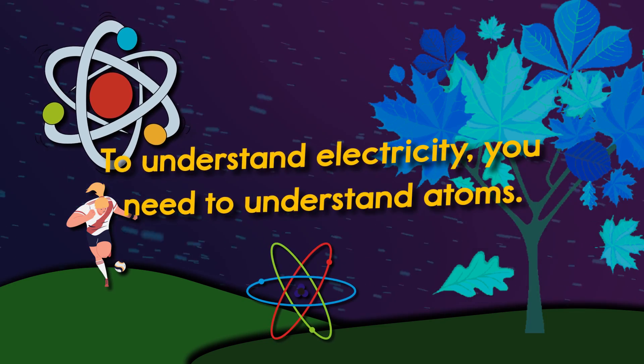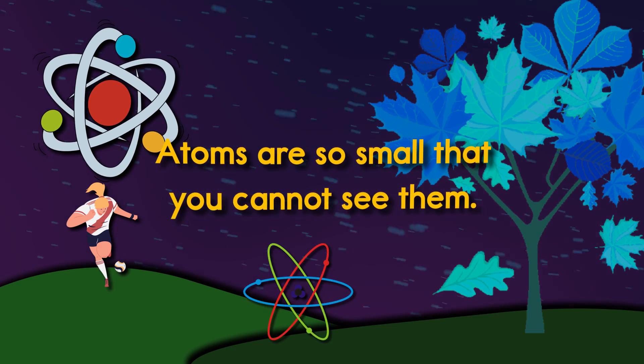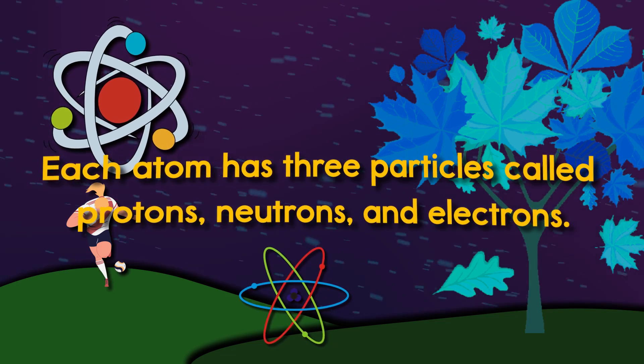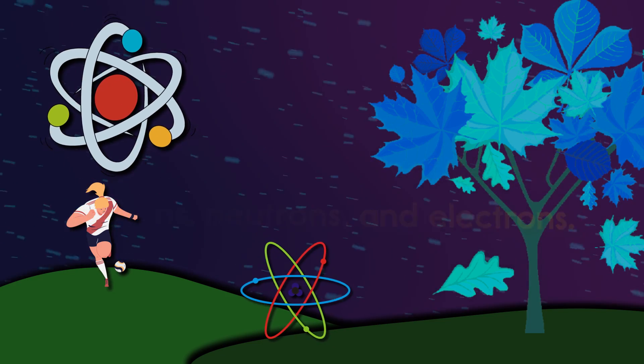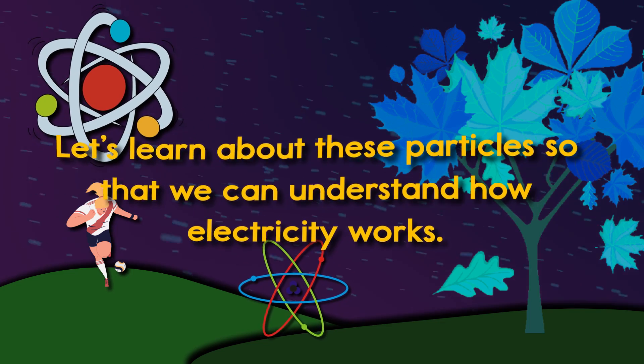To understand electricity, you need to understand atoms. Atoms are so small that you cannot see them. Each atom has three particles called protons, neutrons, and electrons. Let's learn about these particles so that we can understand how electricity works.